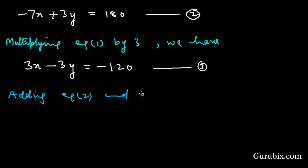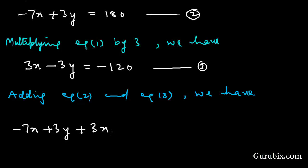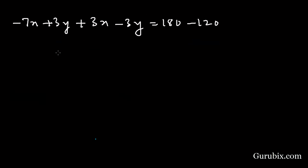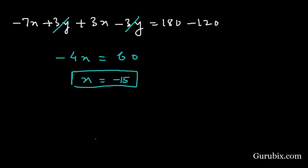Adding equation number two and equation number three: -7x + 3y + 3x - 3y = 180 - 120. The 3y terms cancel out, leaving -4x = 60, which means x = -15.